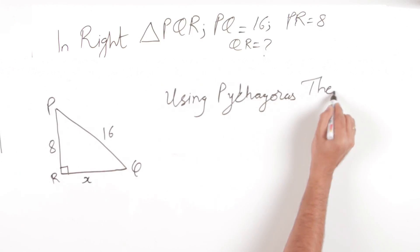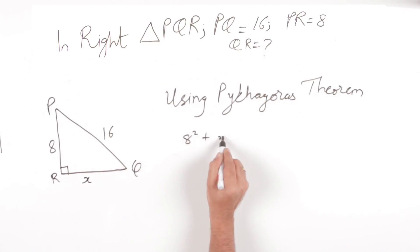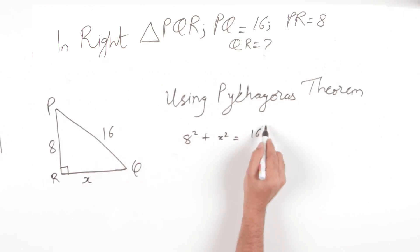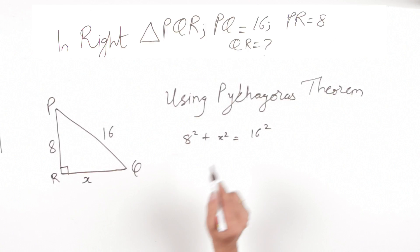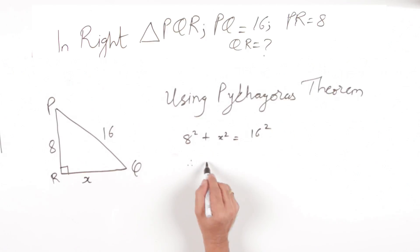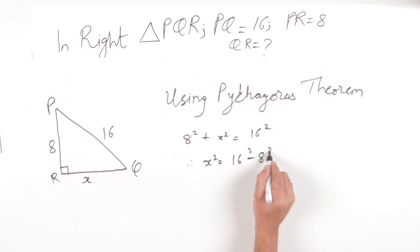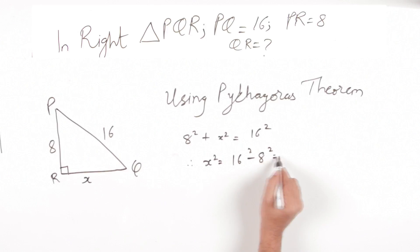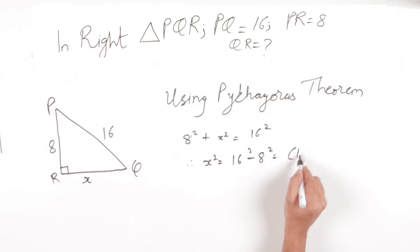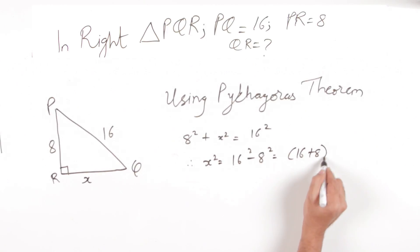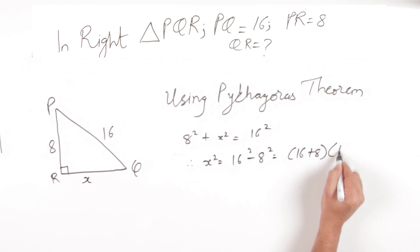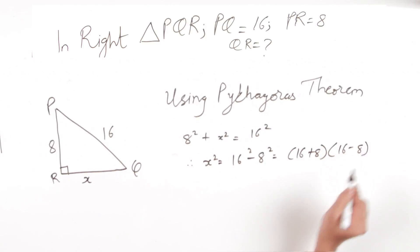By using the Pythagorean theorem we get 8 squared plus x squared is equal to 16 squared. When we simplify the equation it becomes x squared is equal to 16 squared minus 8 squared. We use the factorization a squared minus b squared equals a plus b into a minus b, so here it will be 16 plus 8 into 16 minus 8.